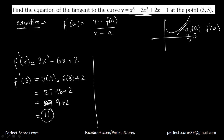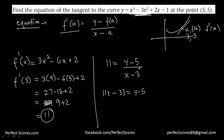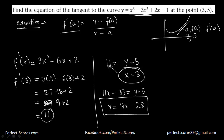Substituting into the formula: 11 equals (y minus 5) over (x minus 3). That means 11x minus 33 equals y minus 5, and so y equals 11x minus 28. This is the equation of the tangent to the curve at the point (3, 5).